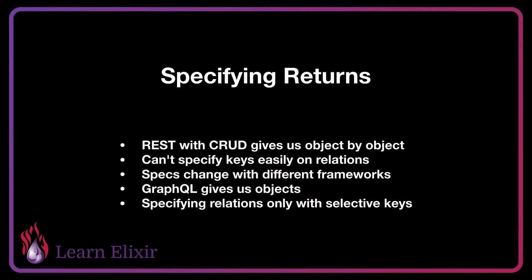The biggest problem with REST is that the specifications change so vastly between different frameworks. In different frameworks in Node, for example, the specification changes and we have different ways of specifying for the exact same thing. GraphQL avoids this by giving us objects that can have sub-relations on them, which allow us to pull the relations, and you also have to specify exactly which keys you want — not only for the object, but for the relations as well.